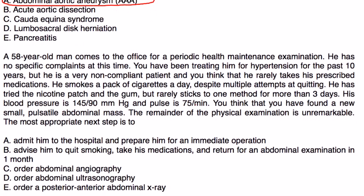And the final one. A 58 year old man comes to the office for a periodic health maintenance exam. He has no specific complaints at this time. You have been treating him for hypertension for the past 10 years. He is very non-compliant and you think that he rarely takes his prescribed medications. He smokes a pack of cigarettes a day. He has tried the nicotine patch and gum, but rarely sticks to one method for more than three days. His blood pressure is 145 over 90. You think that you have found a new small pulsatile abdominal mass. The remainder of the physical exam is unremarkable.